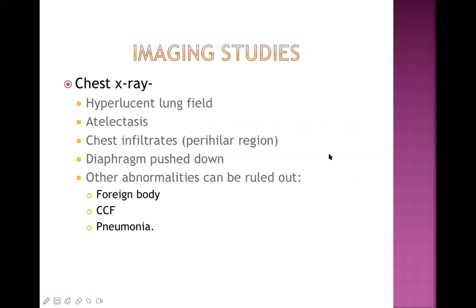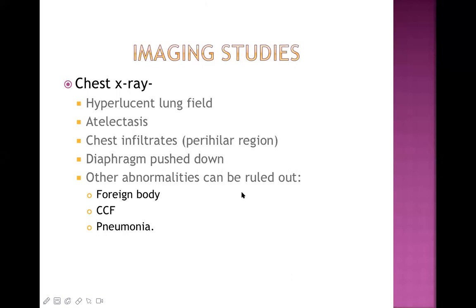On chest X-ray, findings include hyperlucent lung fields (excessive air trapping producing increased blackening), areas of atelectasis, chest infiltration in the perihilar region (typical in viral infection), and flattened diaphragms pushed down due to lung hyperinflation. Chest X-ray also helps rule out differential diagnoses like foreign body aspiration, heart failure, and pneumonia.